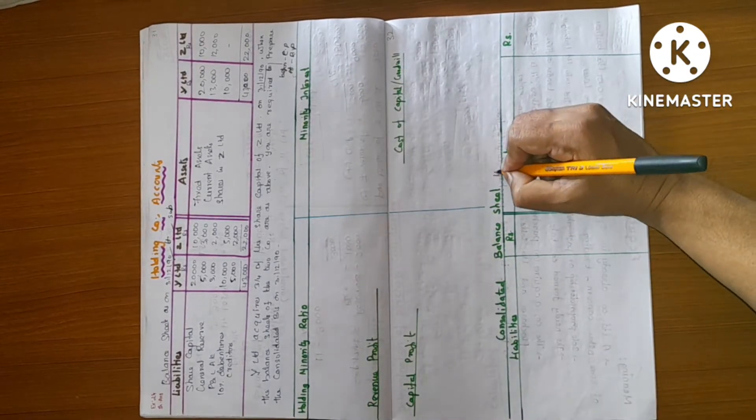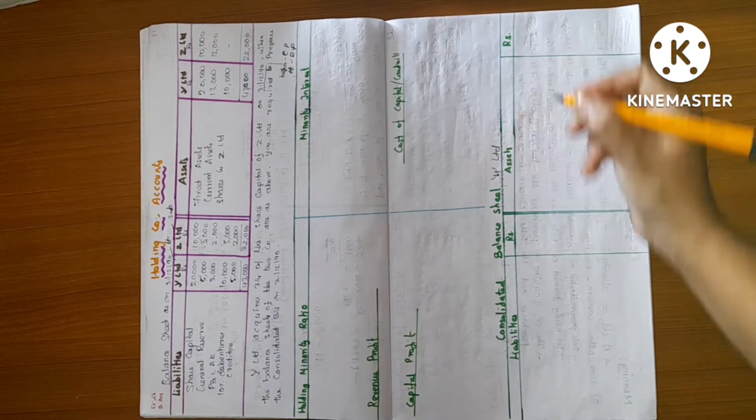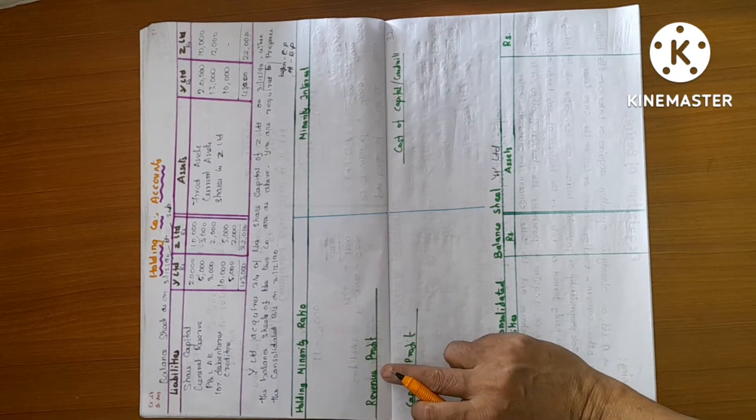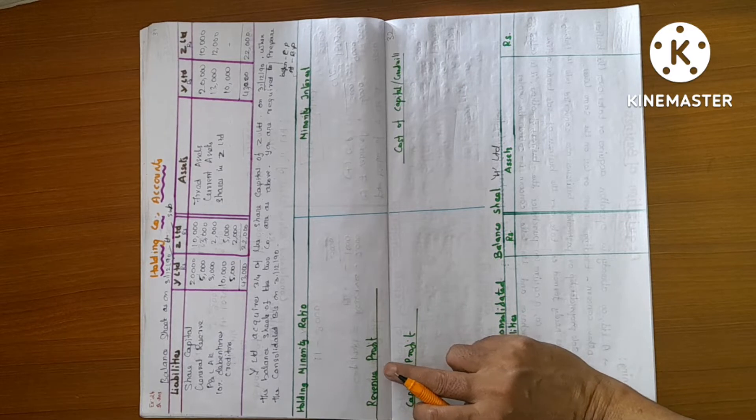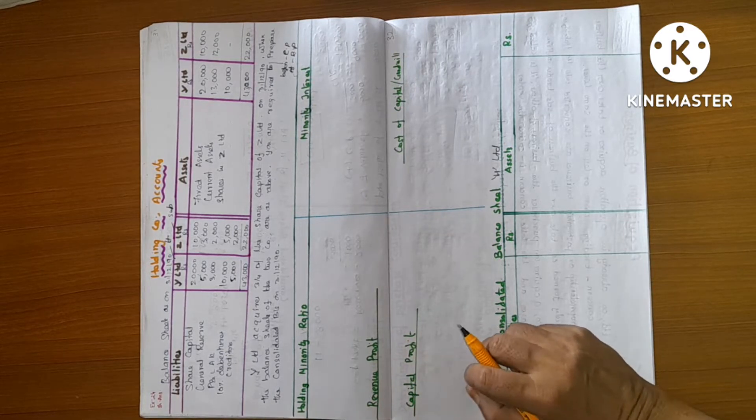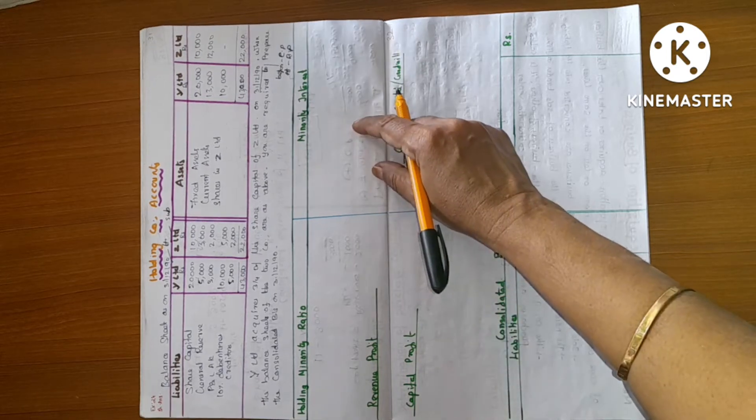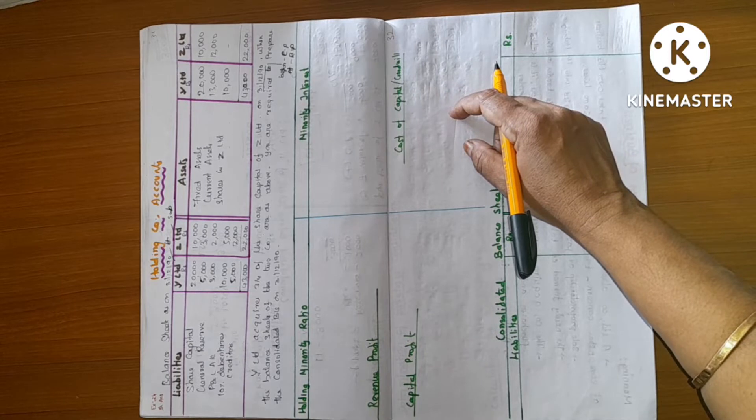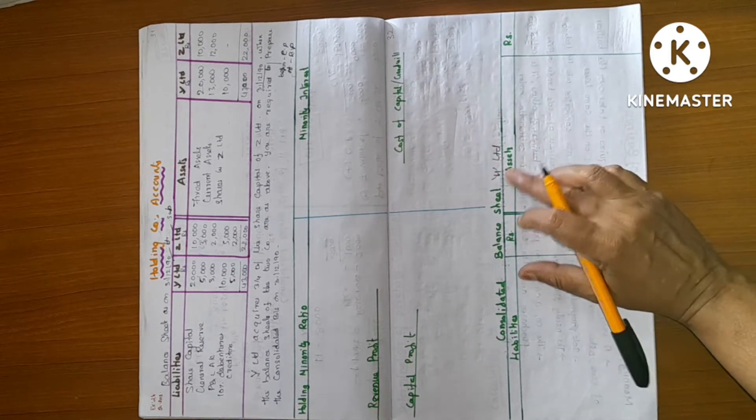So balance sheet of hedge limited. First, holding minority ratio, revenue profit, hedge to the holding company minority holders. Capital profit, holding company minority holders. So minority holders, if you have any benefits, you can pay the holding company. Then you can pay the consultant balance sheet of hedge limited.